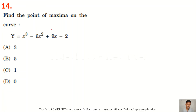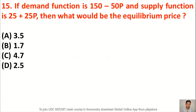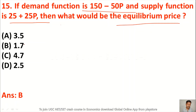Question 14: Find the point of maxima on the curve Y = X³ − 6X² + 9X − 2. The answer is 1. Question 15: If the demand function is 150 − 50P and the supply function is 25 + 25P, what will be the equilibrium price? At equilibrium, demand equals supply, and the right answer is option B, 1.7.